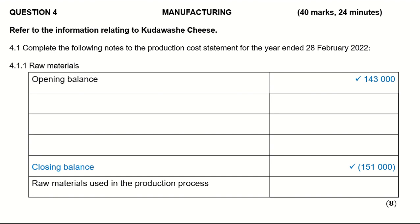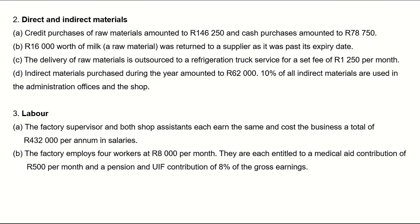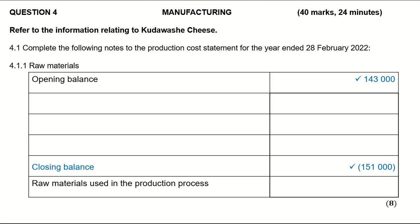Moving on, point two focuses on direct and indirect materials. We had credit purchases of raw materials amounting to 146,250, and cash purchases amounted to 78,750. All of that will go to our direct materials note — we are going to write it as purchases and add them up.